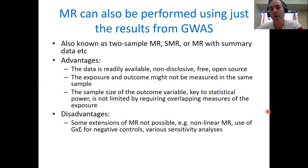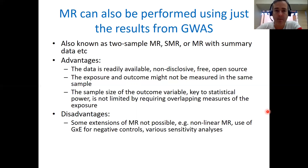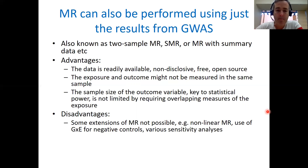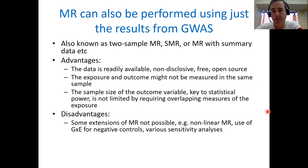Two-sample MR is very useful for exposures and outcomes that are expensive to measure, so you don't have to spend lots of money measuring these phenotypes yourself. There are some disadvantages: you can't do various sensitivity analyses that we'll talk about later in the lecture, and there are some extensions of Mendelian randomization that aren't possible. But in general, two-sample MR is a very powerful form of Mendelian randomization.